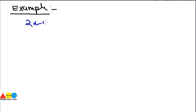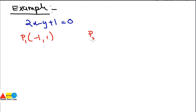Let's have one more example. You will be asked to find which point lies on the line 2x minus y plus 1 equals 0. The points are: P1(-1, 1), P2(2, 5), and P3(2, 3). Let's check them one by one by putting these values in.